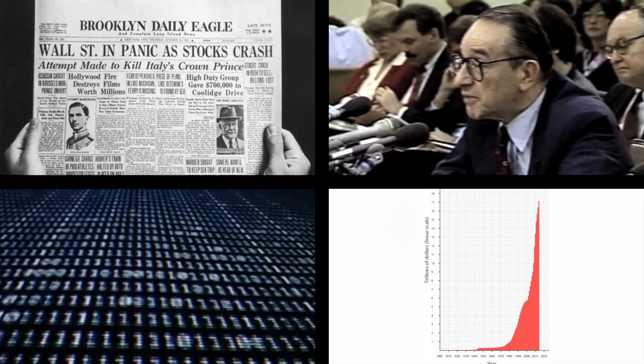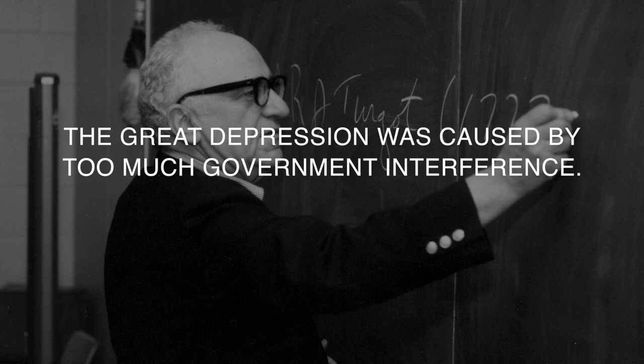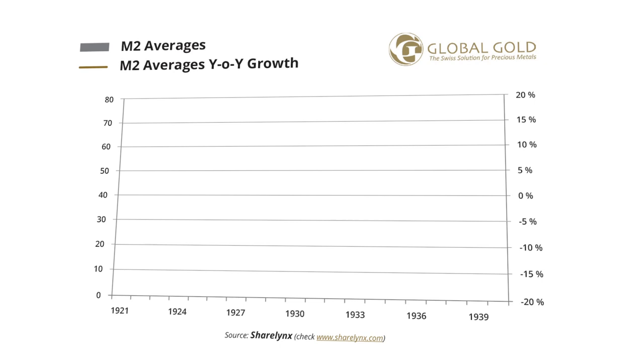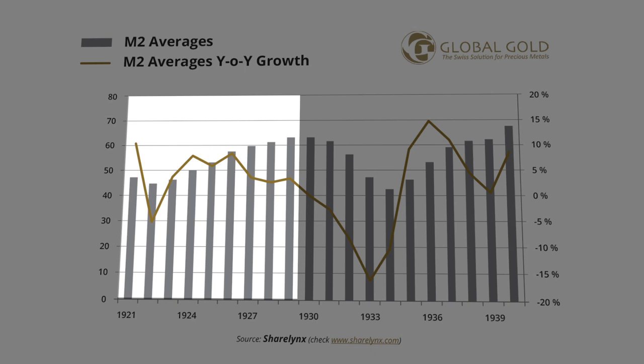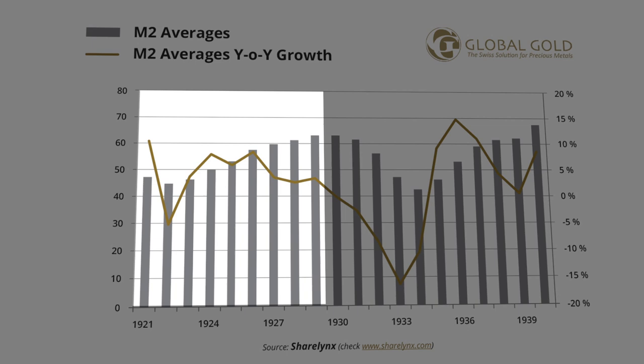Let's examine four major busts from an Austrian business cycle theory point of view. Case 1: The Great Depression. Austrian economist Rothbard argues that the Great Depression was caused by too much government interference. Since World War I, the U.S. insisted on extending economic growth through monetary expansion. Between 1921 and 1929, money supply surged 63%. This spike in inflation was not in circulated currency but rather in bank deposits and other monetary instruments that caused the expansion of the credit base of commercial banks.